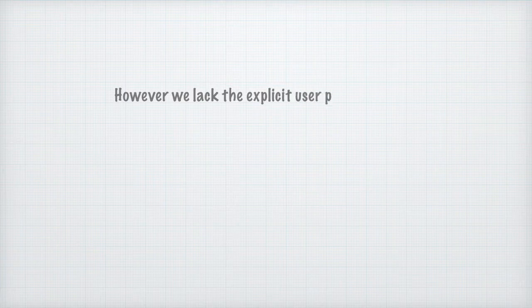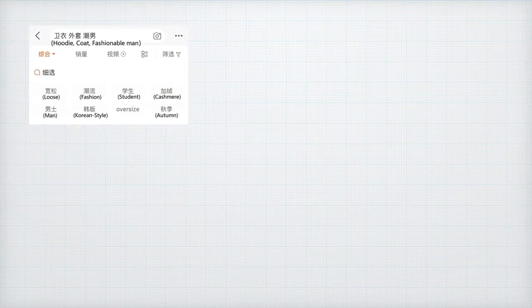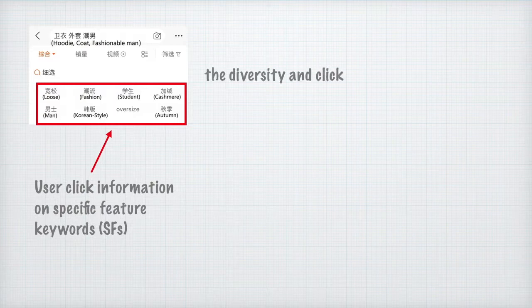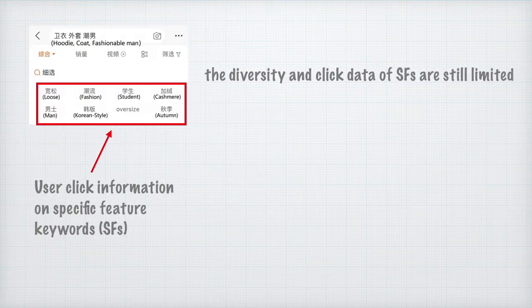However, we lack explicit user preference data for salient product features (SPs). We employ user click information on specific feature keywords as a surrogate for explicit user feedback on SP preference. SPs are presented to a query user after he or she submits a query, having narrowed down the search space. Nonetheless, the diversity and click data of SPs are still limited. In product search, users are more likely to click a returned product record than a shown SP.